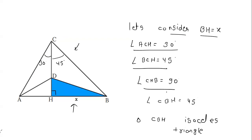We know angle CHB is 90 degrees. Angle CBH is 45 degrees, because this angle is 90 degrees and angle BCH is also 45 degrees. In a right angle triangle the sum of all three angles is 180, so if one is 90 and another is 45, the remaining angle is 45. So angle CBH is 45 degrees.